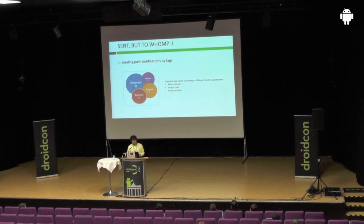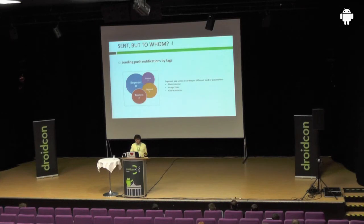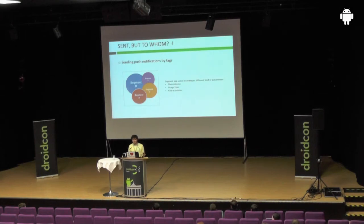We can also target by user characteristics. For example, if our application has a Facebook login, we can take relationship status information. When sending a Valentine's Day promotion, we don't want to send it to single users — only to users who are in a relationship. These examples can be extended easily.